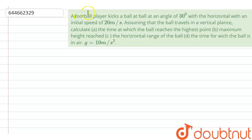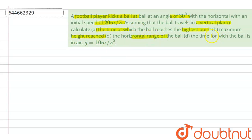A football player kicks a ball at an angle of 30 degrees with the horizontal, with an initial speed of 20 meters per second. Assuming the ball travels in a vertical plane, calculate: the time at which the ball reaches the highest point, the maximum height reached, the horizontal range of the ball, and the total time for which the ball is in air.